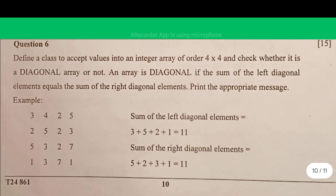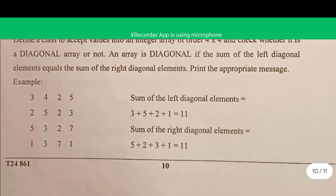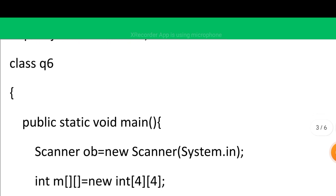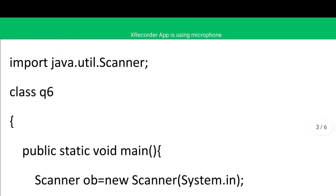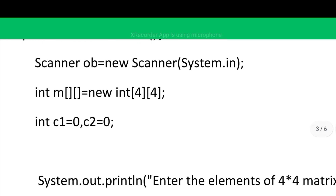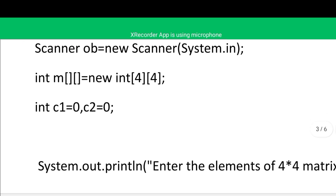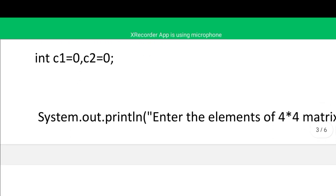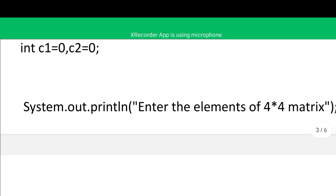Question number six: we define a class to accept values into a 4x4 integer array. If the sum of both diagonals — left and right — are equal, it is known as a diagonal array. We import java.util.Scanner, create the class and main function, declare a two-dimensional array 'a' of size 4x4, and take two variables c1 = 0 and c2 = 0 to calculate the sum of the left and right diagonals.